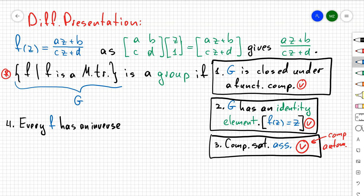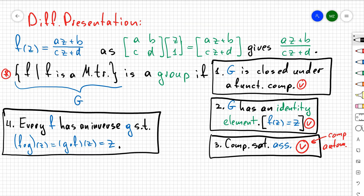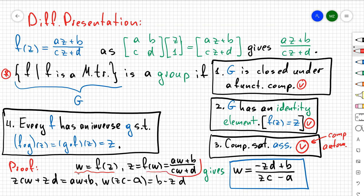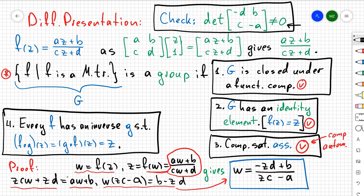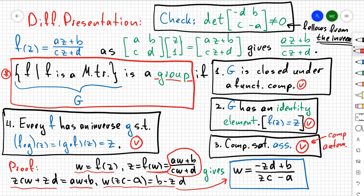The fourth property we need to show is that every element of our group, our element f, has an inverse g, so that f ∘ g and g ∘ f equal the identity element. To show that, I take some w = f(z) and reverse it by swapping z and w and solving for w. We obtain the inverse: g(z) = (-dz + b) / (cz - a). You can verify that plugging w into f gives the identity. The coefficients -d, b, c, -a form the inverse matrix of [a, b; c, d], so their determinant is non-zero. Since we found our inverse element g with non-zero determinant, we have proved the last property — the set of all Möbius transformations is a group.